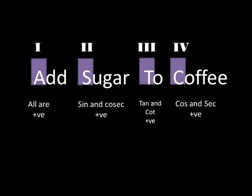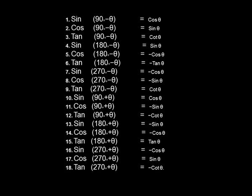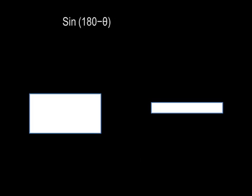Now we have solved the problem of sign — positive and negative. The second problem is which trigonometric ratio will come next. Observe these special angles carefully. What we find is the first term is a multiple of 90. So similarly, 90 minus theta can be written as 90 × 1 minus theta, and 180 minus theta can be written as 90 × 2 minus theta.